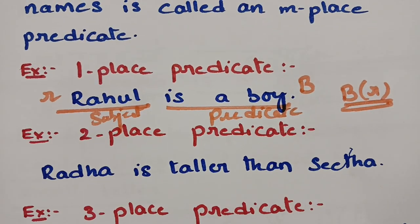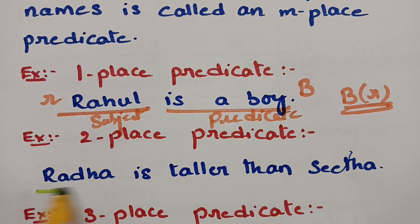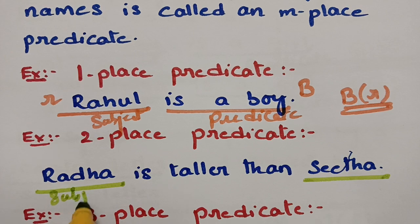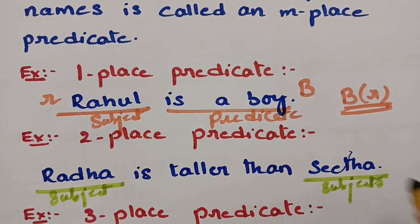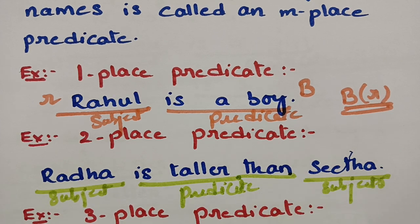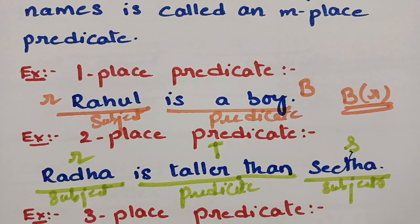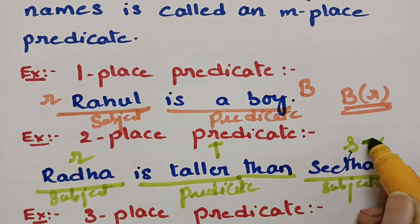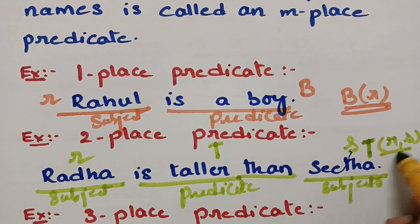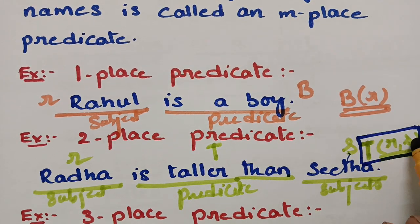For a two-place predicate, consider 'Radha is taller than Sita.' There are two names: Radha and Sita — both are subjects. 'Is taller than' is the predicate (capital T). Since there are two names, this is a two-place predicate, symbolized as T(r, s), read as 'Radha is taller than Sita.'